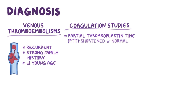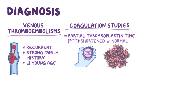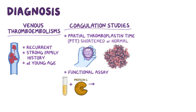PTT is a lab value that shows how long it takes for clots to form via the intrinsic and common pathway. Functional assays can also be done: purified protein C gets mixed with the person's plasma and PTT is measured before and after. In individuals without factor V Leiden, PTT is usually prolonged; in individuals with factor V Leiden, PTT stays the same.